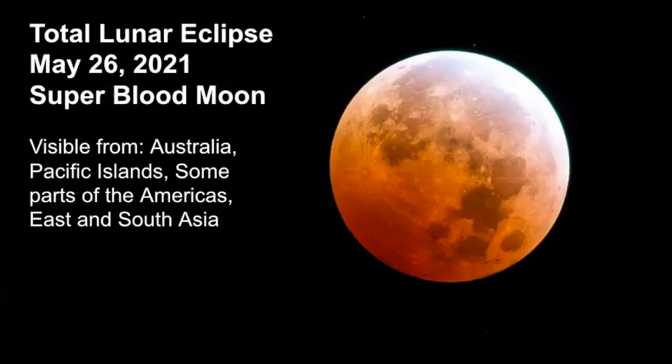Keep in mind that there's another total lunar eclipse coming up on May 26th, 2021. This is called a super blood moon, and it's visible from parts of Australia, the Pacific Islands, some areas in the Americas, as well as East and South Asia.